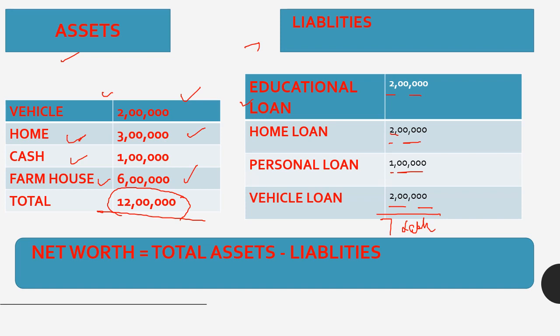When we calculate our net worth, we calculate: total assets minus total liabilities. Here total assets are 12,000,000 and total liabilities are 7,000,000. So 12,000,000 minus 7,000,000 equals 5,000,000. Net worth is 5,000,000 rupees.